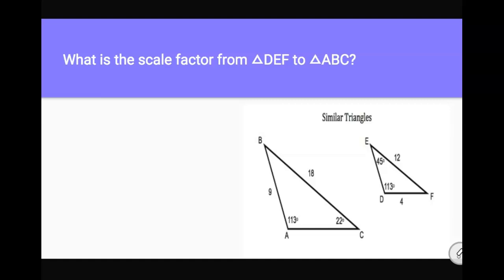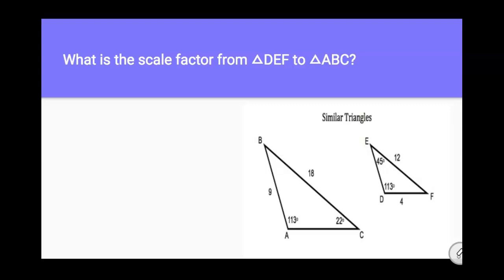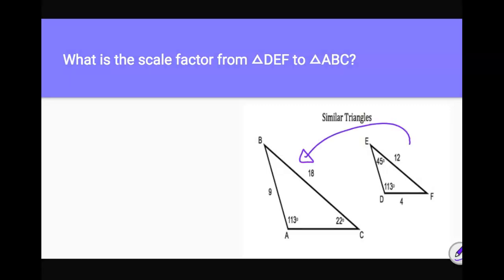But what if I ask you, what's the scale factor from triangle DEF to triangle ABC? In this case, we're getting from a smaller number to a larger number. So I'm saying 12 times what equals 18. And here I can do 18 divided by 12. I can reduce it as a fraction and get three halves. Or I can divide, in this case with my calculator, it's a decimal, 1.5. Either of those is an acceptable scale factor.